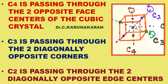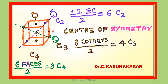The C2 axis passes through diagonally opposite edge centers. There are 12 edge centers, and each C2 axis passes through 2 edge centers, so 12 divided by 2 gives six C2 axes of symmetry present in cubic crystal. The C4, C3, and C2 axes of symmetry are shown in the diagram.